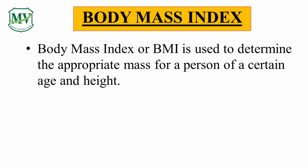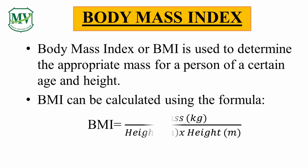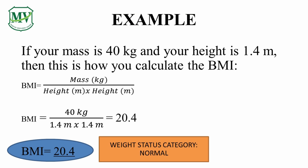Now let's go to Body Mass Index. Body Mass Index, or BMI, is used to determine the appropriate mass for a person of a certain age and height. To obtain Body Mass Index, you divide mass over height squared. For example, if your mass is 40 kilograms and your height is 1.4 meters, write the formula, substitute the values, multiply 1.4 by 1.4, then divide, and we get the answer 20.4 — the weight status category is normal.